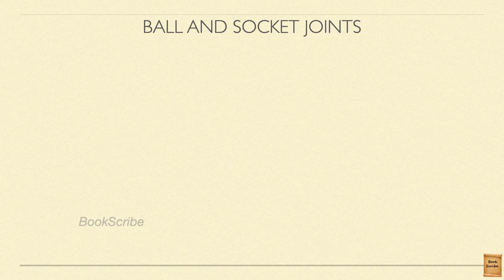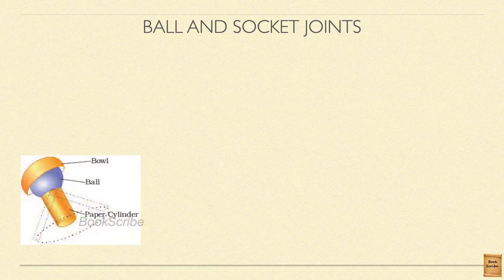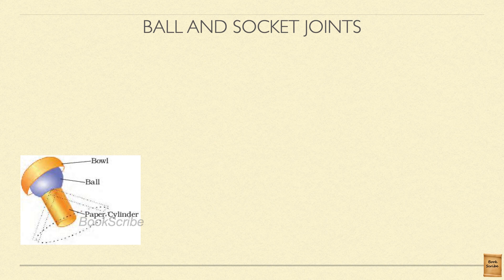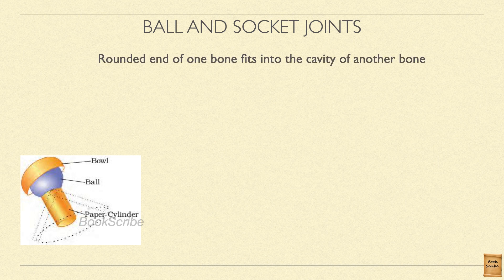First we are going to see the ball and socket joint. To understand this, we can make a model or simply imagine. Roll a paper like a cylinder and take a rubber or plastic ball. Make a small hole in it and fit the paper cylinder into it. Now put the ball along with the paper cylinder on a bowl. Move the paper cylinder — the ball moves along with it and moves freely on the bowl. You can move it front, back, and rotate. So it moves freely. Imagine this paper cylinder as your arm and the ball as the upper end of your arm where it joins the shoulder, and the bowl as the end of your shoulder. This is a ball and socket joint.